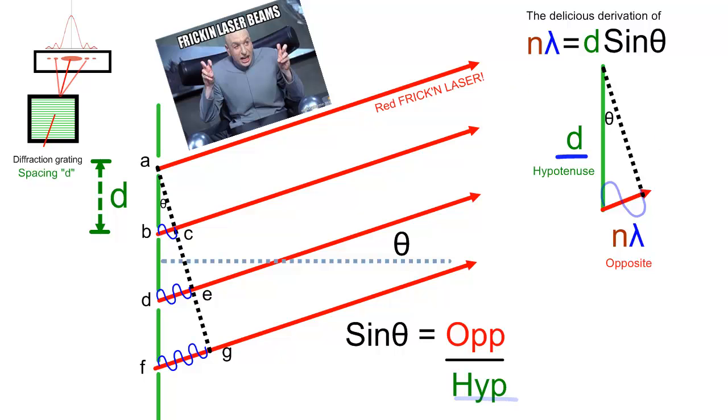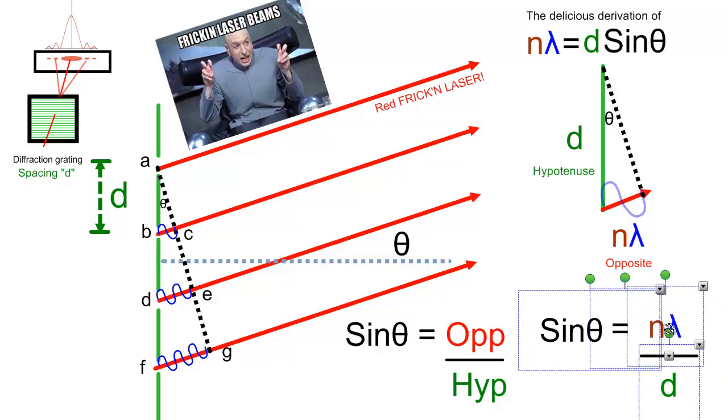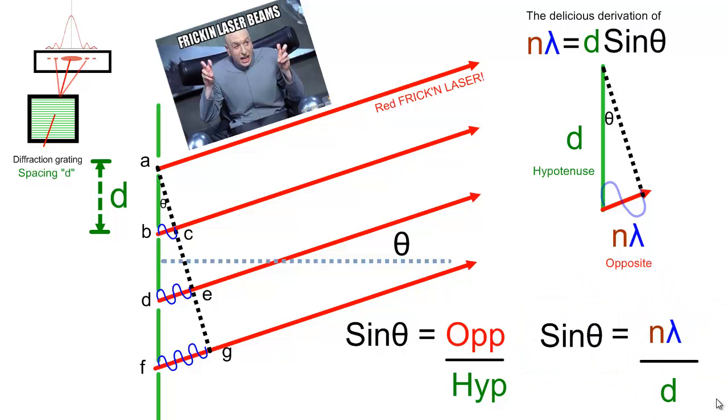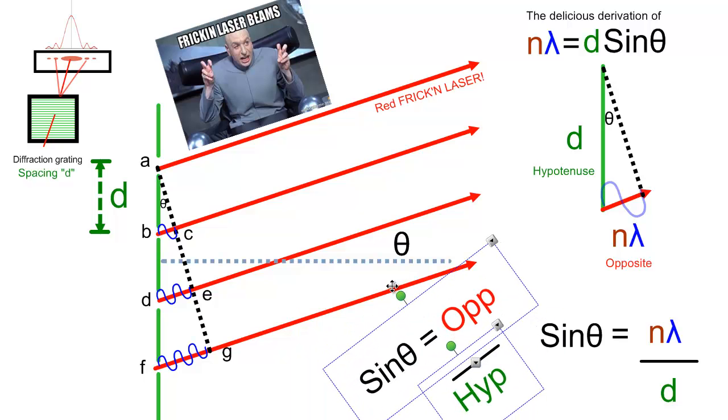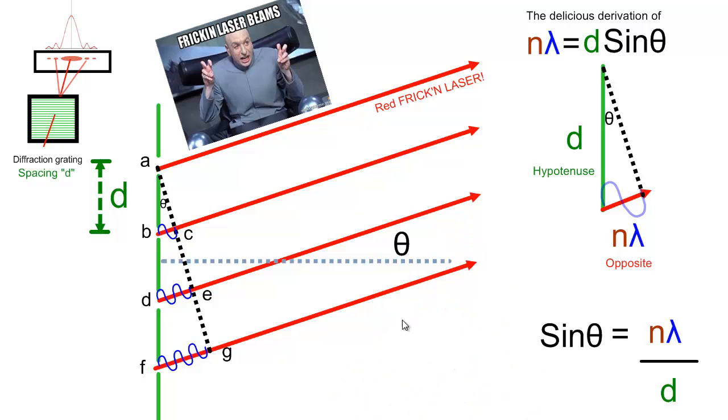So I'm just going to rewrite this guy like this. Sine theta equals n lambda over d. Let's make some room here.